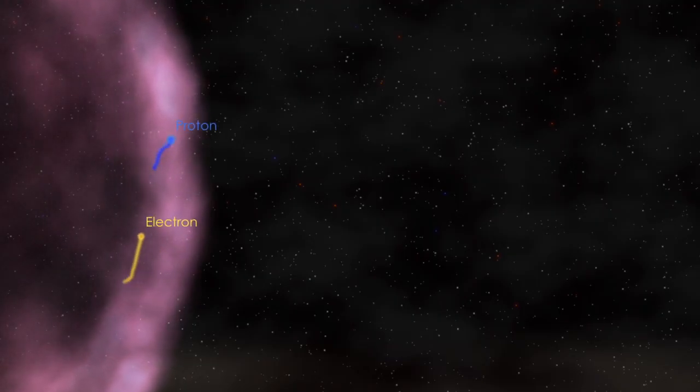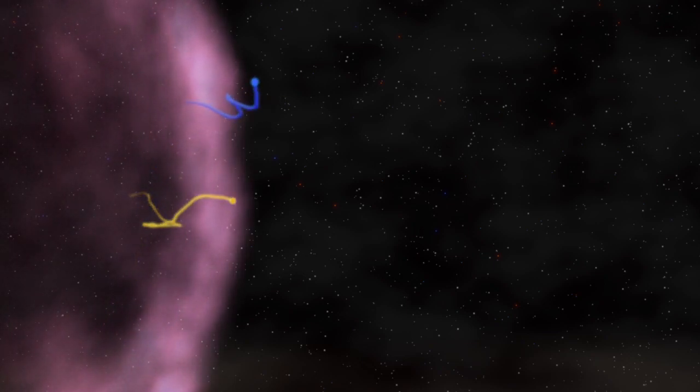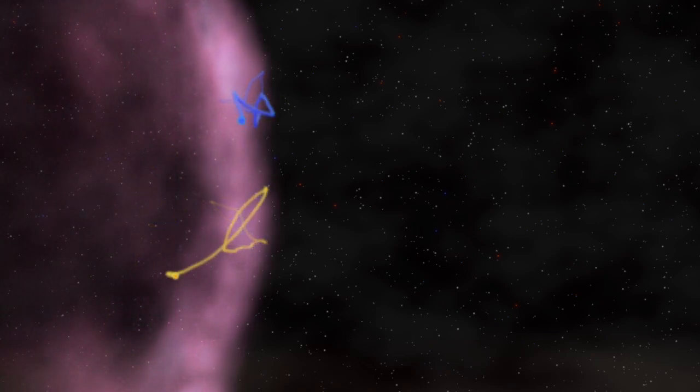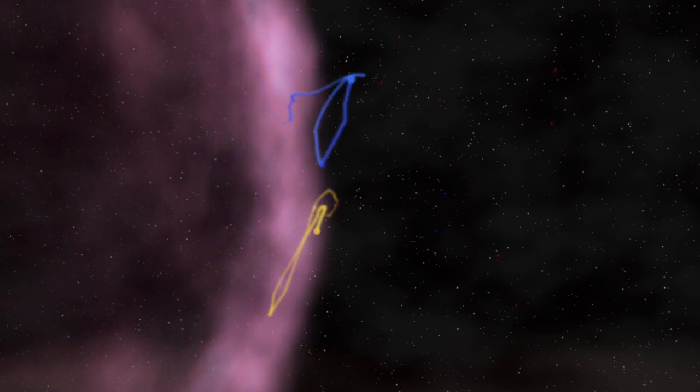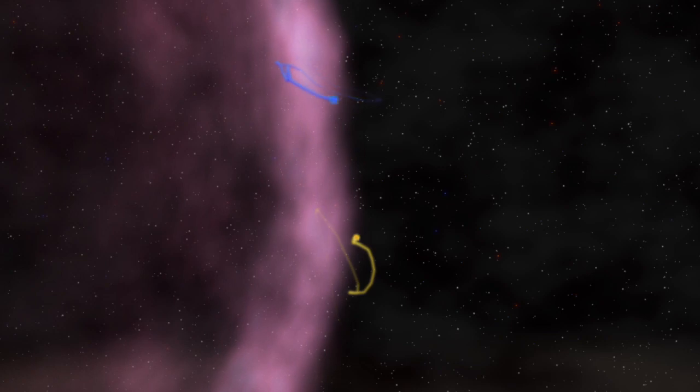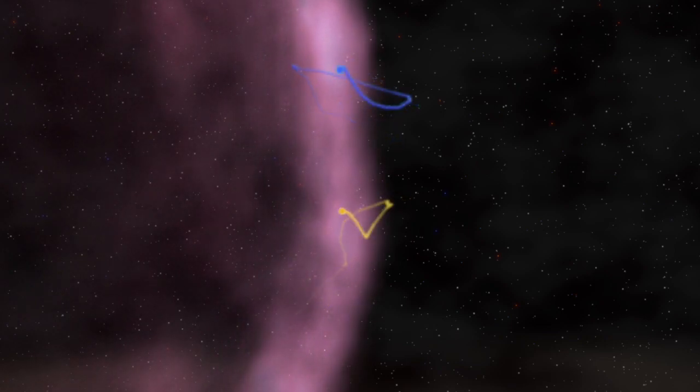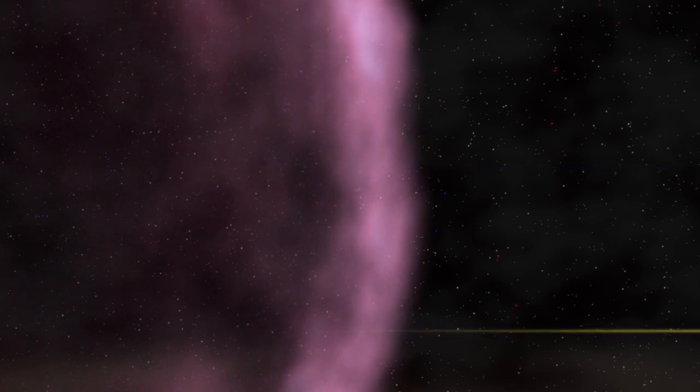Confined by a magnetic field, high-energy particles move around randomly. Sometimes, they cross the shockwave. With each round trip, they gain about 1% of their original energy. After dozens to hundreds of crossings, the particle is moving near the speed of light and is finally able to escape.